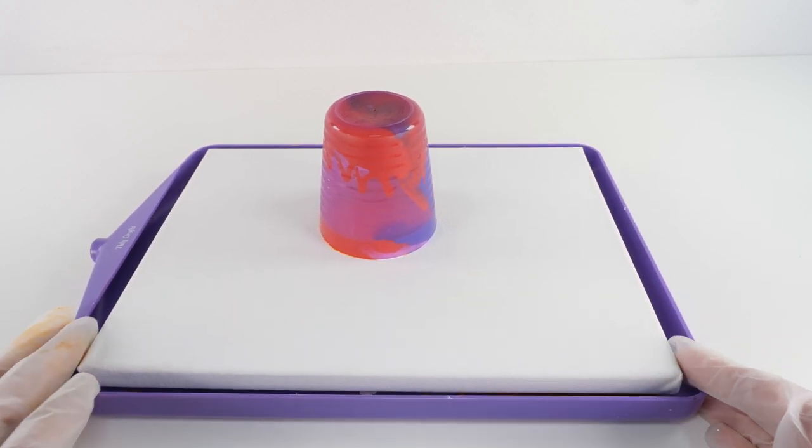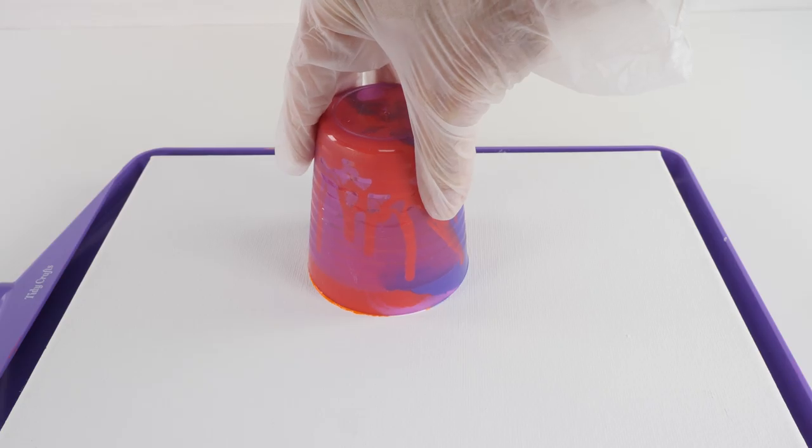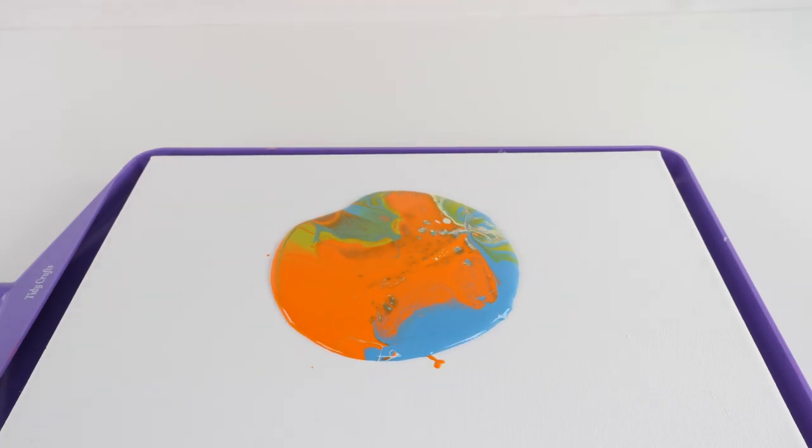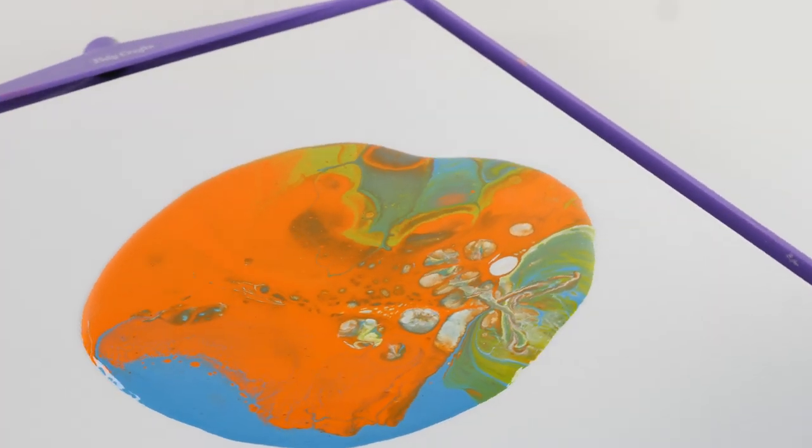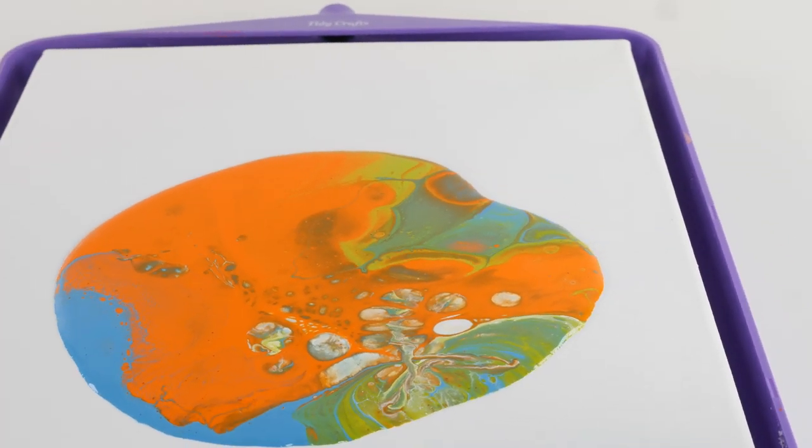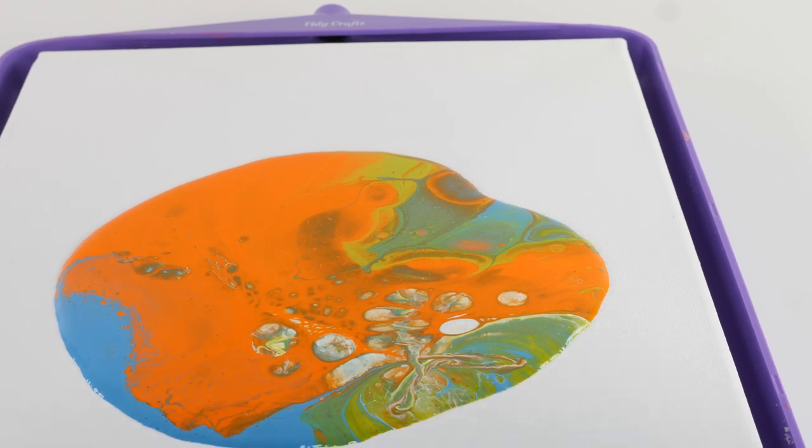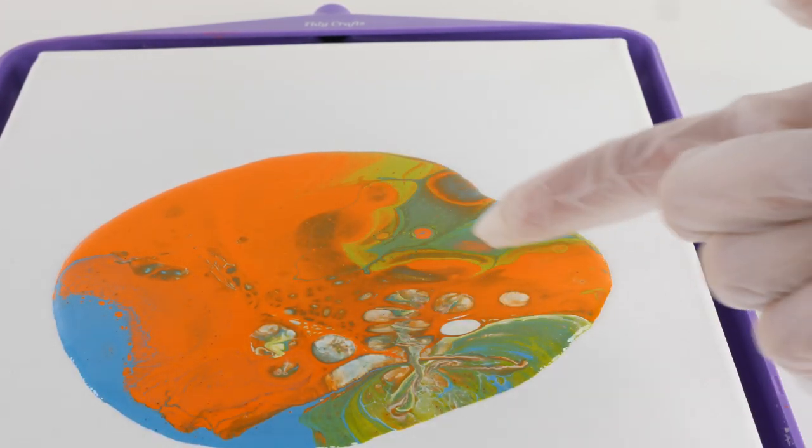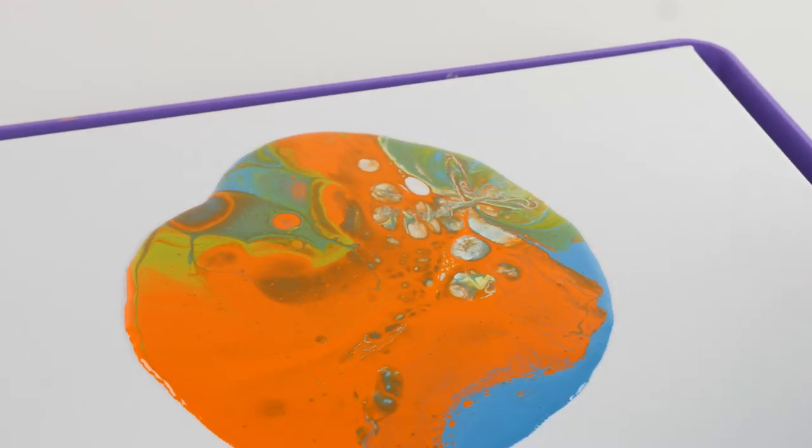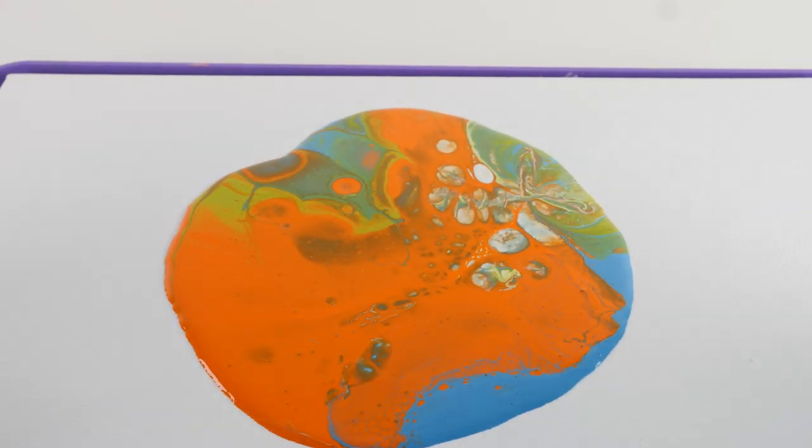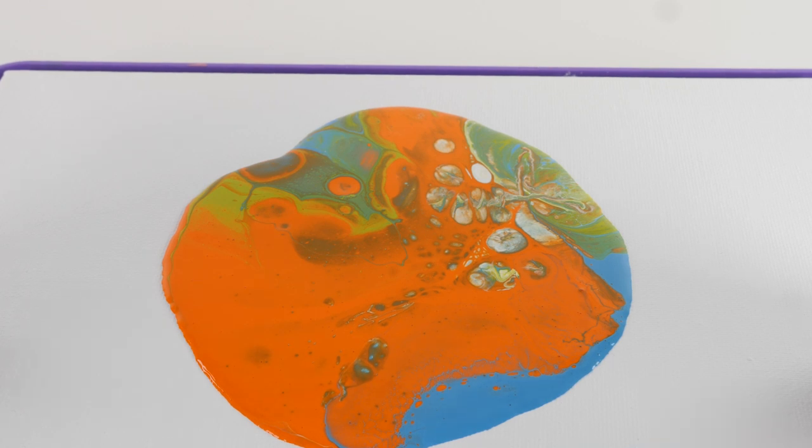I'm gonna set it down and let it sit and all drip for a minute, get all the paint dripping down onto the canvas, and then we're gonna lift the cup up. I thought my paint was so much runnier, but it's still not going crazy like I thought it would. I can see some of the silicone, those are called the cells. Maybe I would add even more next time. Now I'm just gonna take the canvas.